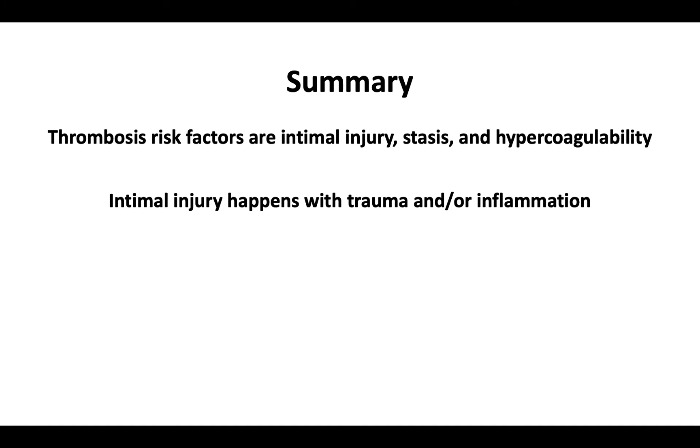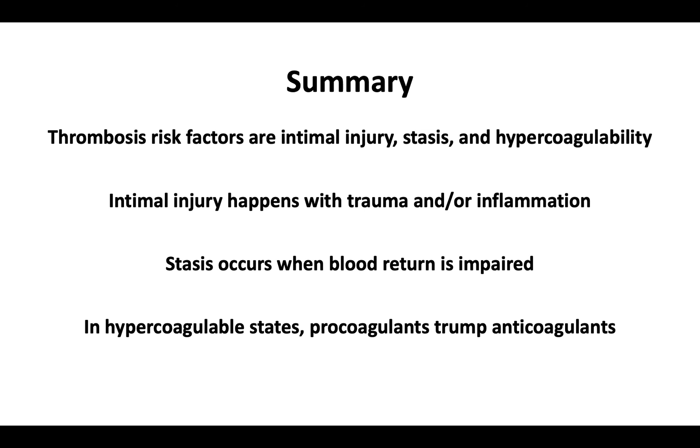In summary, we learned that thrombosis risk factors are intimal injury, stasis, and hypercoagulability. Intimal injury can occur with trauma and or inflammation. Stasis occurs when blood return is impaired, and in hypercoagulable states, procoagulants overpower the function of endogenous anticoagulants.